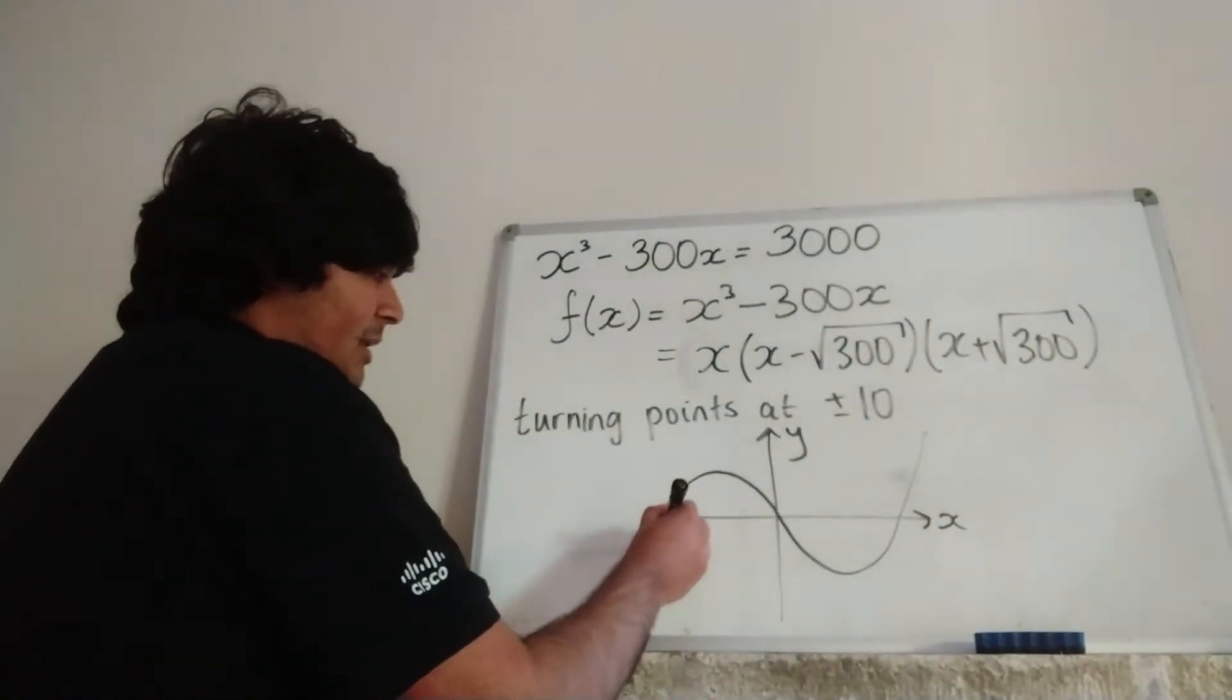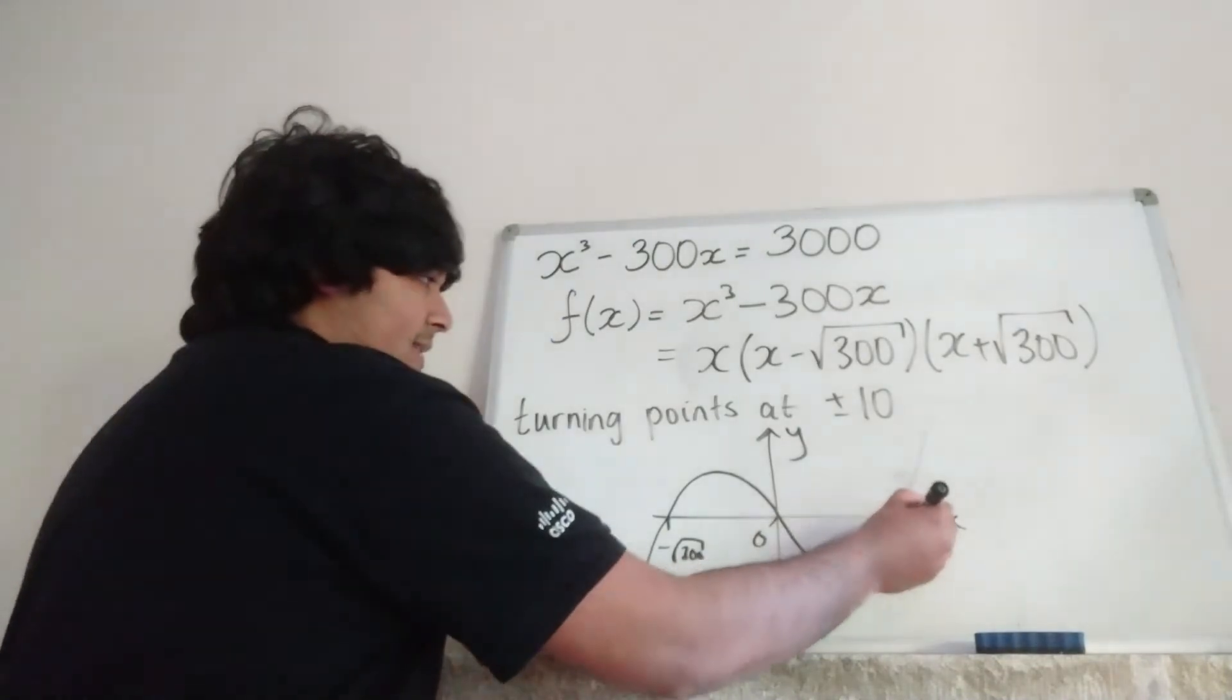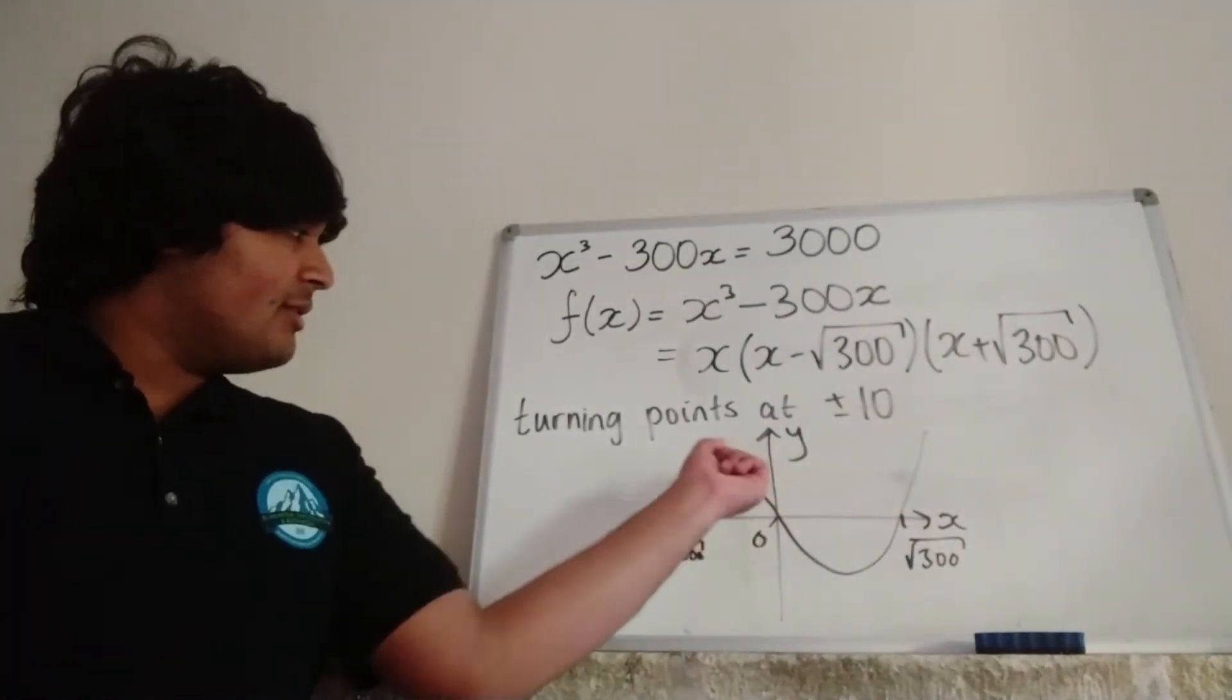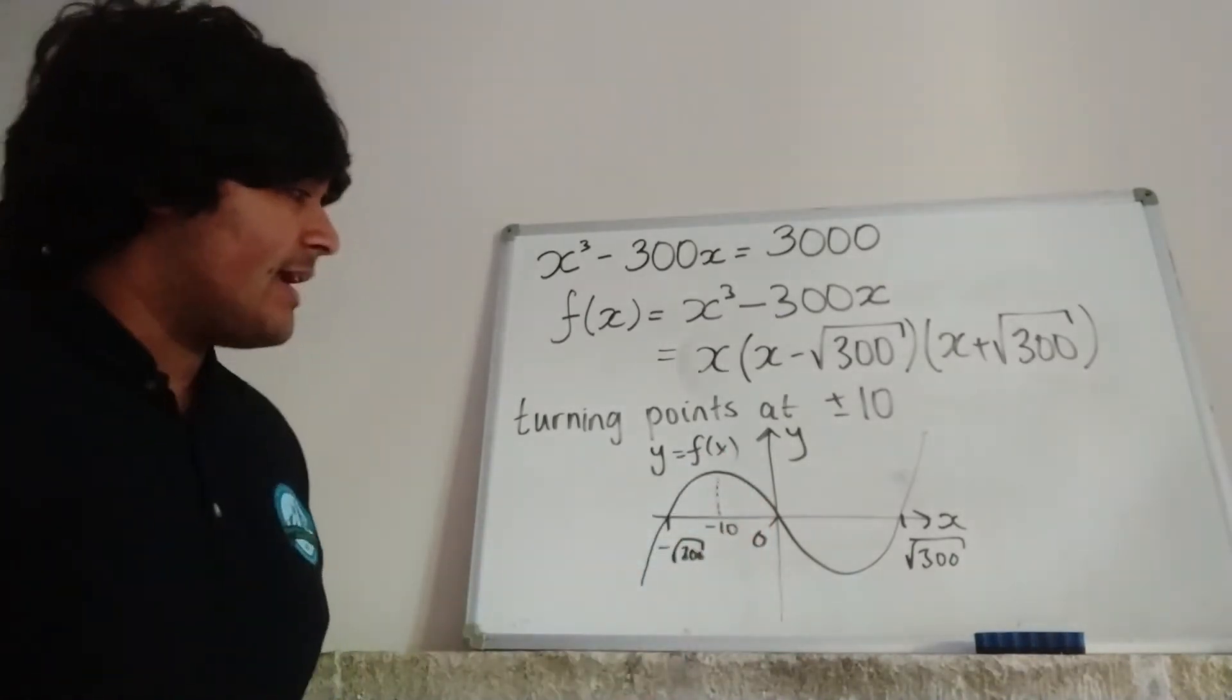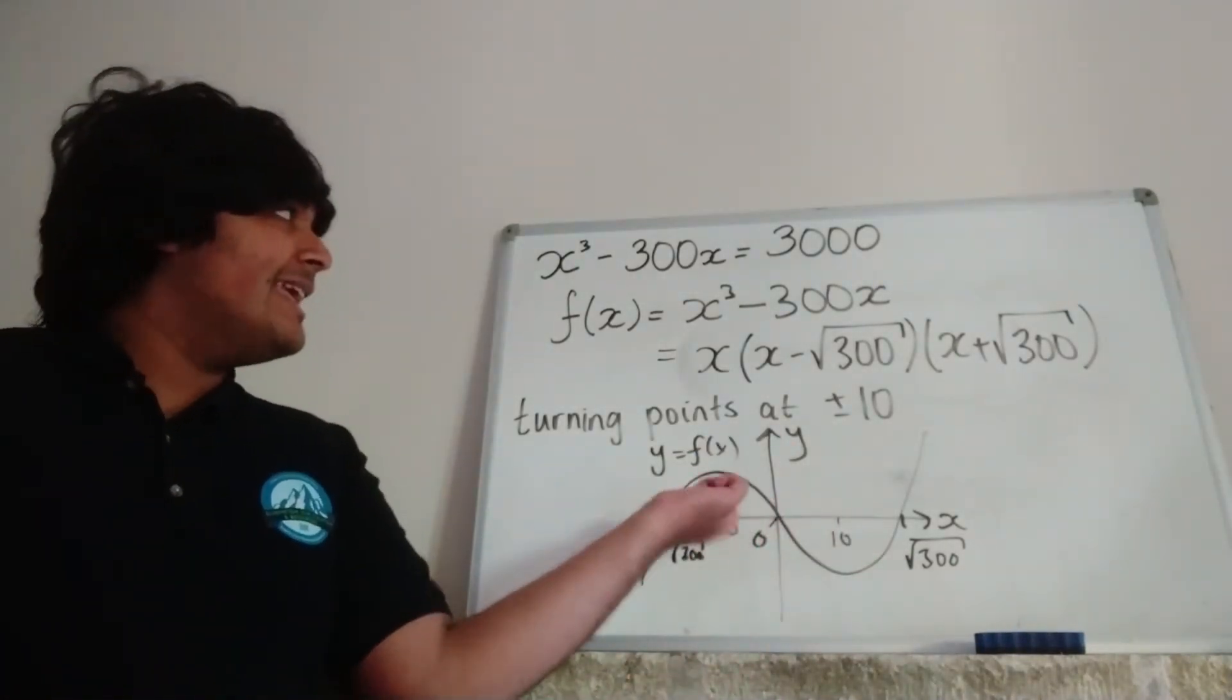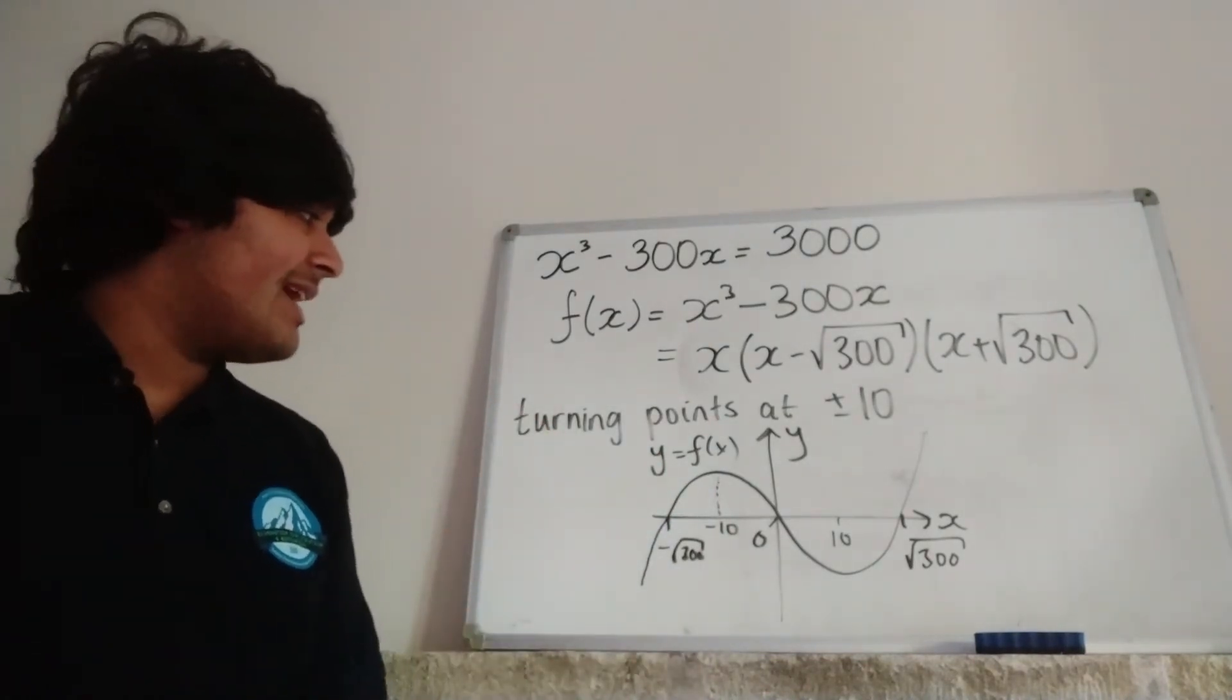Okay, where this thing here is minus root 300. This guy here is zero, and this thing here is positive root 300, like so. And now we know that this point here, where f of x has a turning point, is just minus 10. Okay, and this point here is 10. We don't actually care about this 10. We only care about this minus 10 here because we want to know, can f of x, or how many times does f of x equal 3,000?